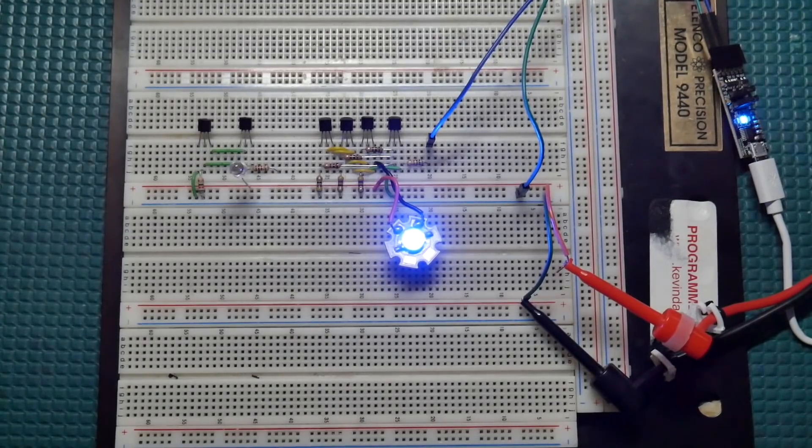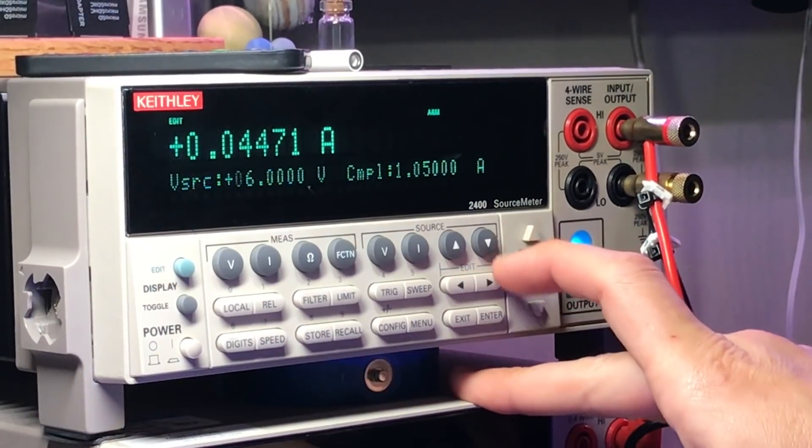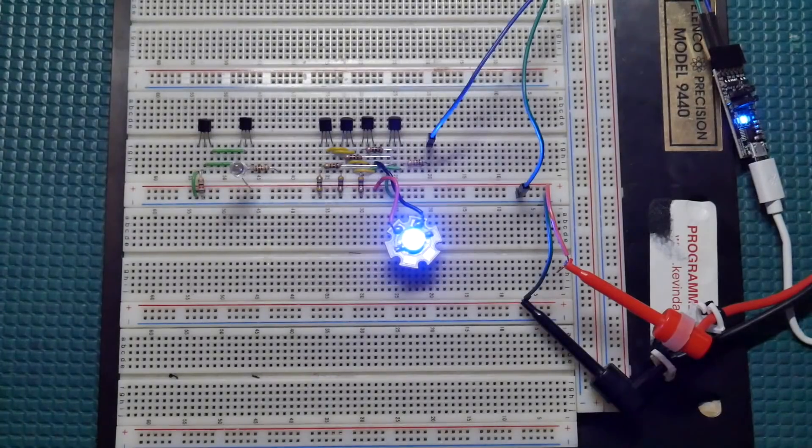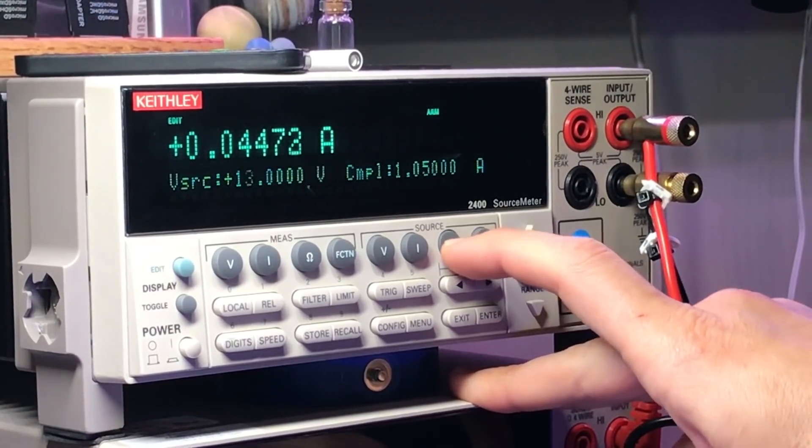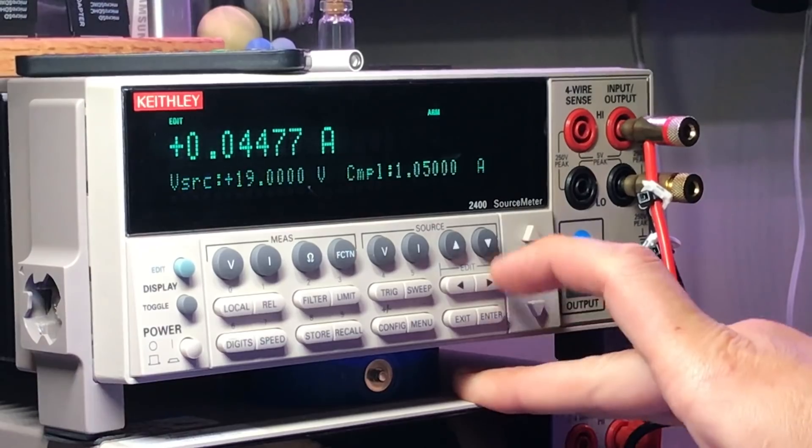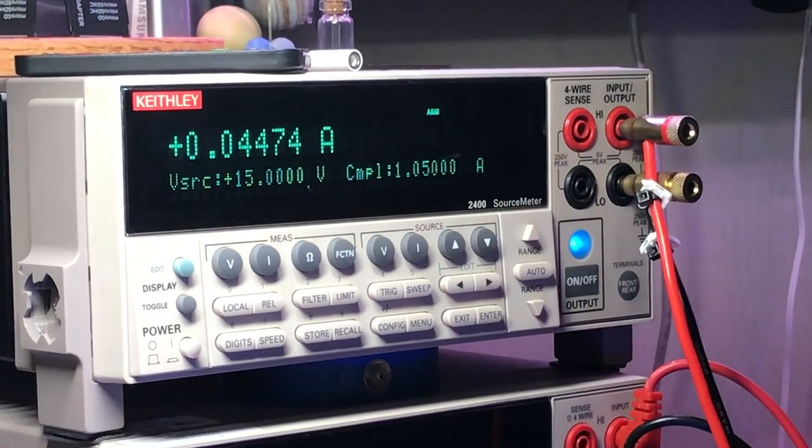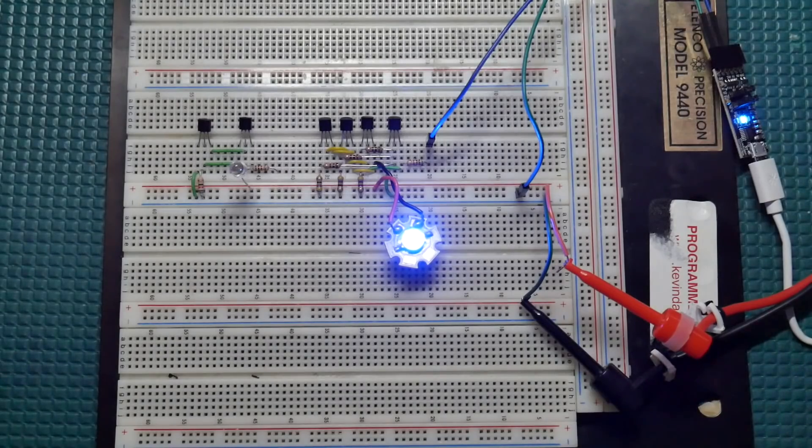So you see there, it's set to about 45 milliamps. And as I change that voltage around, you can see that it maintains that 45 milliamps. So let me show you the schematic and we'll get into how this whole thing works.